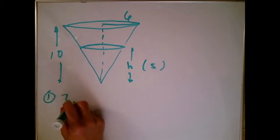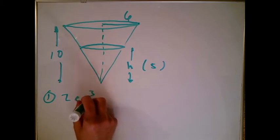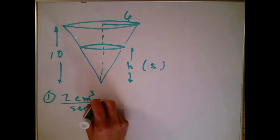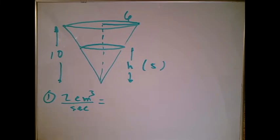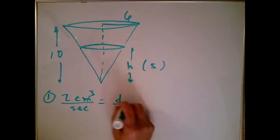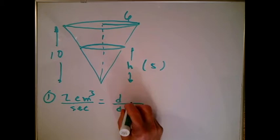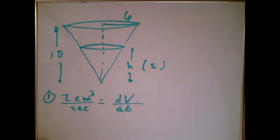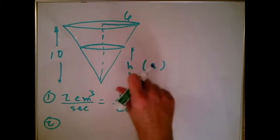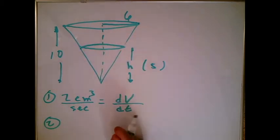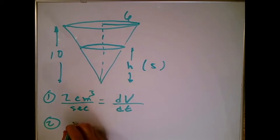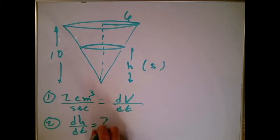They gave us 2 cubic centimeters per second. Is that how fast H is changing? No, it's not. That's actually cubic centimeters measure volume. So if I want to write this as a derivative, this is going to be dV/dt like that. So that's the rate they gave us. The second thing is they asked for a rate. They said, how fast is the water level rising? Well, how fast the water level rising is how fast H is changing. So what they really want is dH/dt, like that.